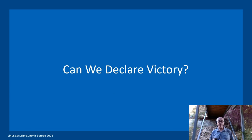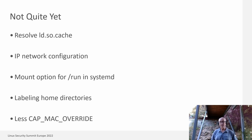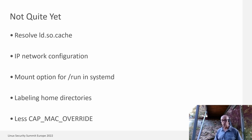Can we declare victory? Not quite. We're pretty close, but we have to resolve things like ld.so.cache, which gets updated by systemd processes all the time and gets the systemd label — meaning anything that wants to look at that cache has to be able to access systemd process objects, which is a bit complicated. We haven't addressed IP network configuration at all, though that turns out to be fairly straightforward. We want to set the mount option for /run in systemd, but systemd doesn't do that yet. We need a mechanism for labeling home directories. And we really want to reduce the use of CAPMAC_OVERRIDE — there's just too much of that.